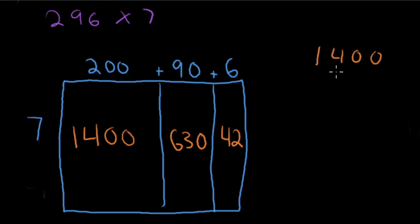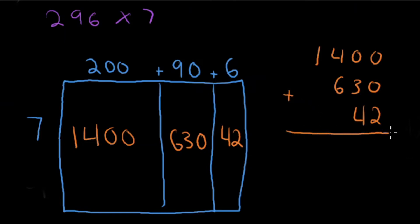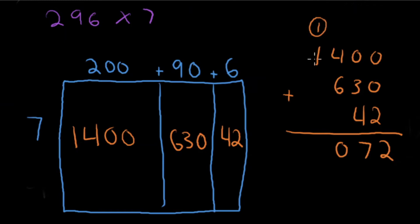This is where I have to be careful, because students normally make a lot of mistakes here if they do not line up the correct place values. For 42, the 4 is in the tens column and the 2 is in the ones column. Adding from greatest to least: 0 plus 0 plus 2 is 2, 0 plus 3 plus 4 is 7, 4 plus 6 in the hundreds column is 10, carry 1, 1 plus 1 is 2. So our answer is 2,072 for 296 times 7.